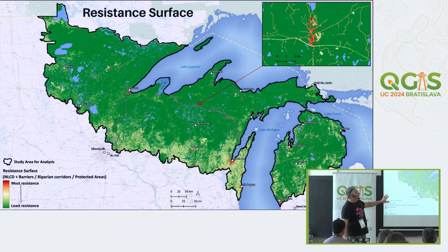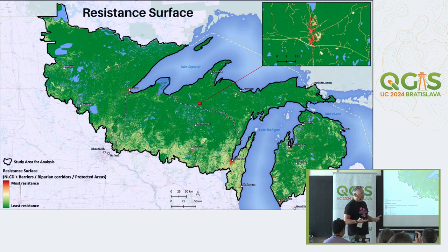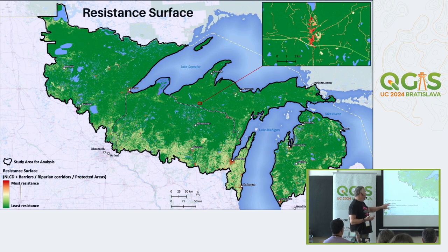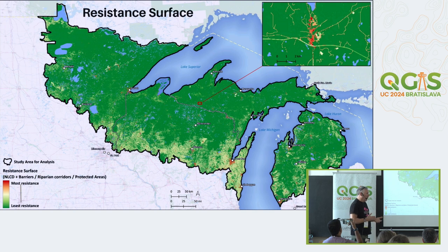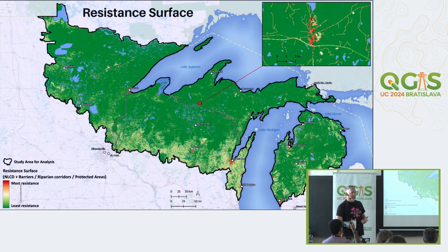This is the resistance surface I developed. When zoomed out it doesn't look like much, but zooming in you can see towns and highways acting as barriers. It was built by reclassifying land cover data, combining that with road barriers, removing bridges that cut over rivers, adding riparian corridors buffered by 300 meters, incorporating protected areas, and baking in species richness data.